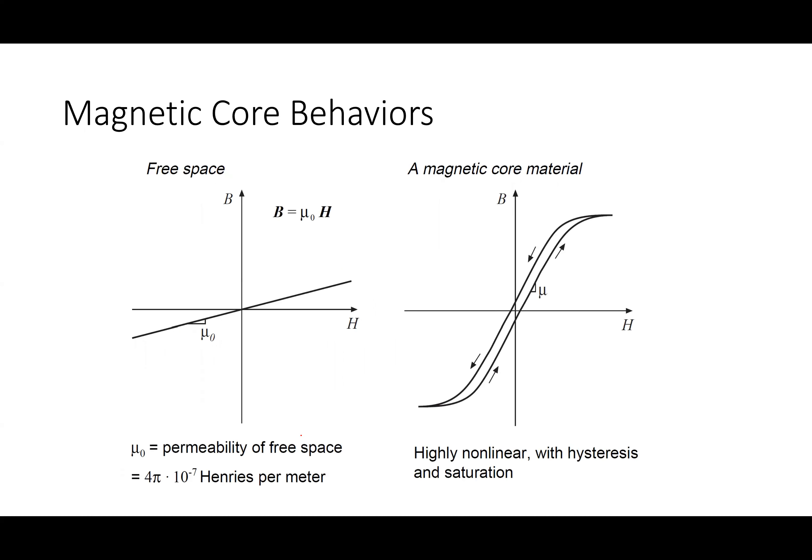What makes magnetic materials special is what's happening inside them. You may have seen a BH curve before. The right-side picture shows the BH relationship for a real magnetic material. Whereas B = mu*H is linear for free space or air, a real magnetic core shows a completely different relationship. We say this material has hysteresis.